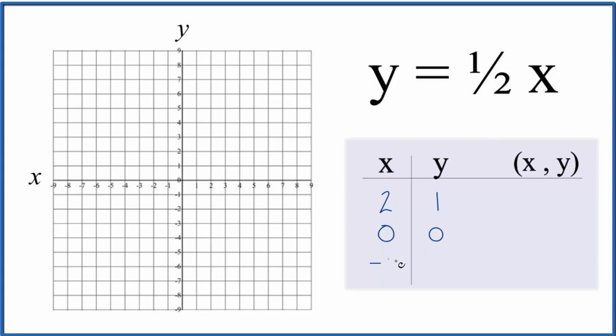And then I'll put a negative 2 in. One-half times negative 2, that'll give me negative 1. So these are the points that we'll graph for our linear equation y equals one-half x. We could have put other values in, these just seem to work out to give us points that'll show right up on our graph here.